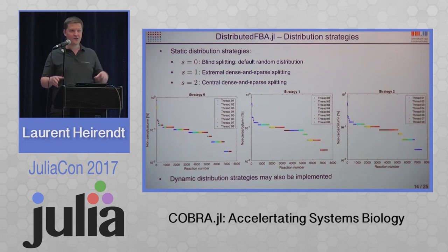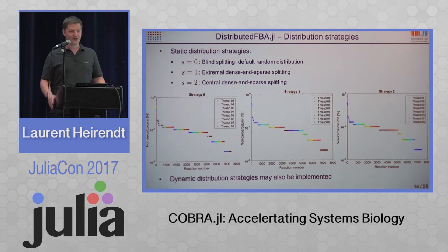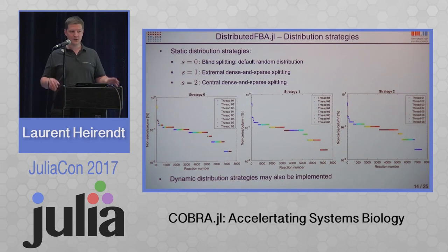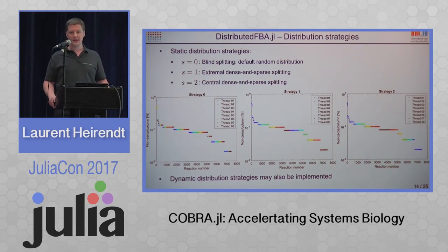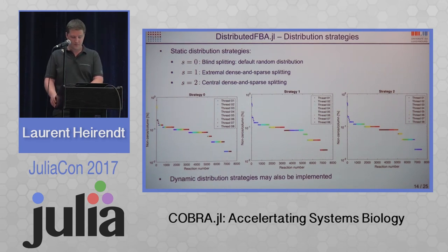When splitting reactions among workers, you try to do it as efficiently as possible. There are several strategies: one is just blindly splitting — give the first reaction to the first worker, the next to the next worker, and so on. However, that might not be the most efficient. We tried dynamic scheduling, but we found speed increases just by distributing reactions strategically — giving a tough problem to one worker and a less tough problem to another. The toughness of LP problems depends on the density of the columns, that is, the number of metabolites participating in each reaction. Fewer metabolites means easier LP to solve.